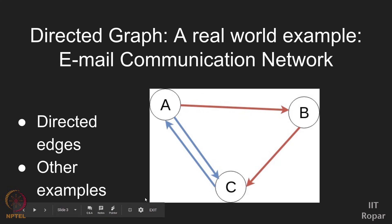The key point is to understand that directed edges exist and what they signify in different networks. For email or WhatsApp communication, a directed edge goes from the sender to the receiver — if you reply, you get a back edge; if you don't, you won't. So we have communication networks, citation networks in academia, supply chain networks in marketing, and matrimonial or social networks. Once you model your data as a graph, especially a directed graph, analytics becomes much easier. There are many applications where directed graphs are very useful.